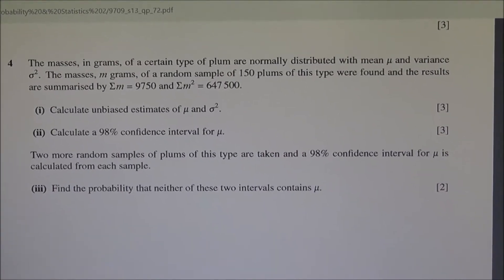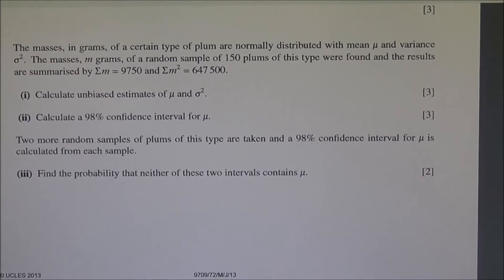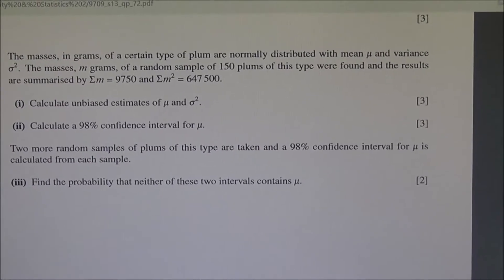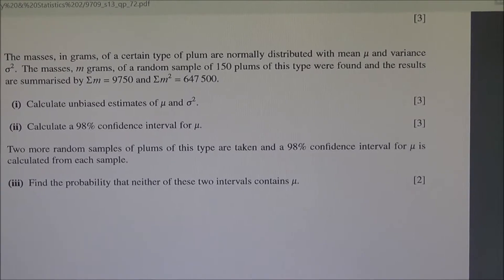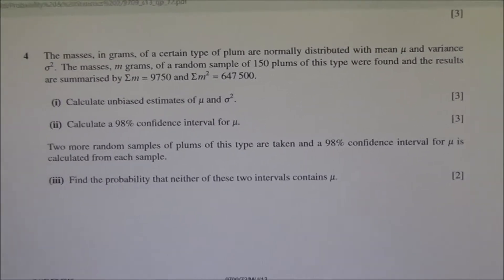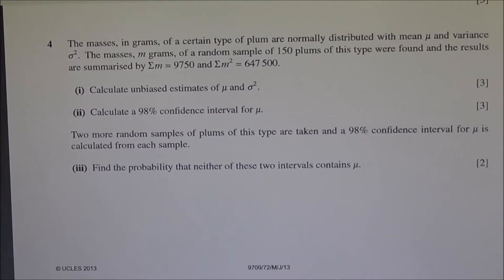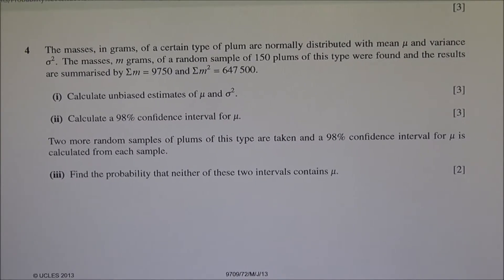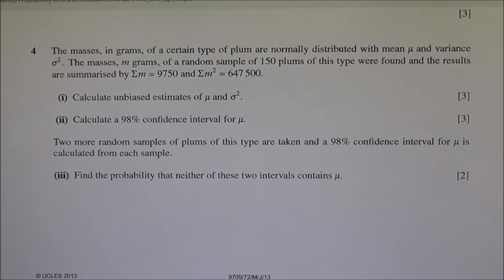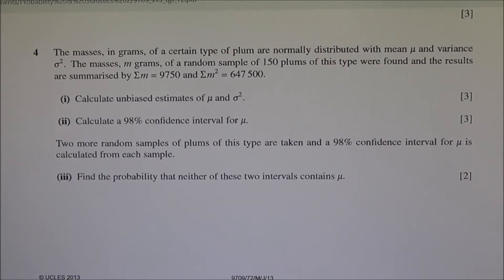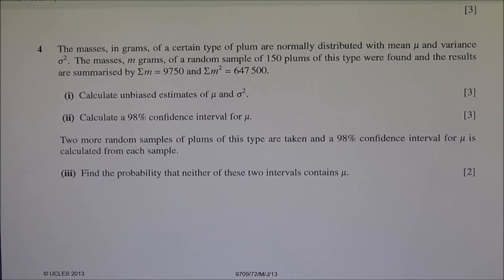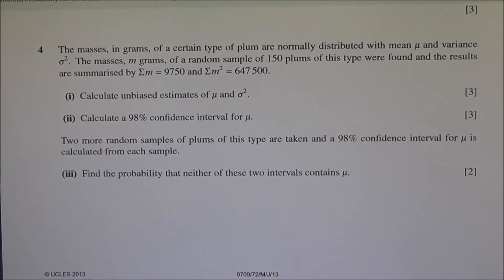Hi, for question number 4, the masses in grams of a certain type of plum are normally distributed with mean mu and variance sigma square. The masses, m grams, of a random sample of 150 plums of this type were found and the results are summarized by summation of m equals 9750 and summation of m square equals 647,500.